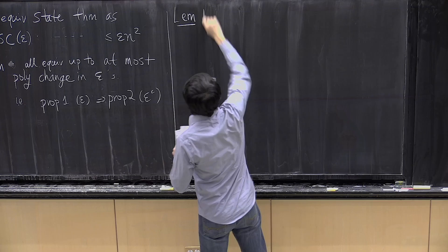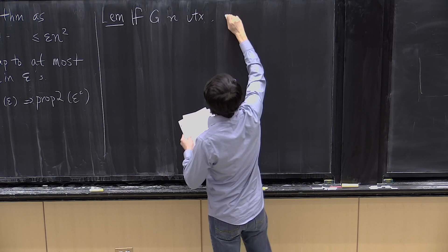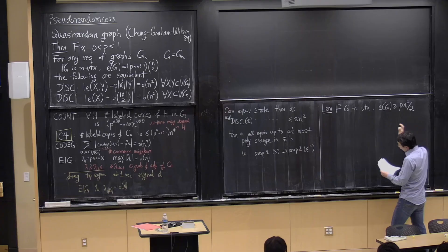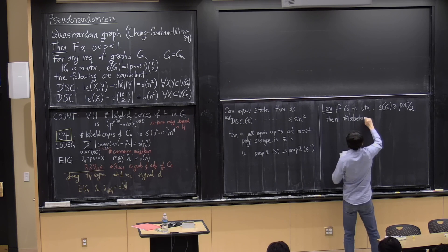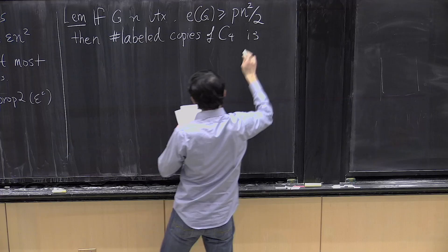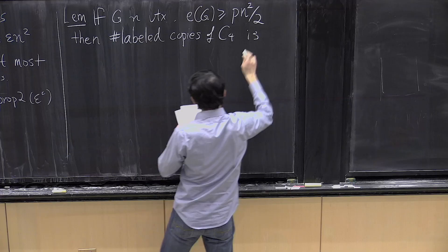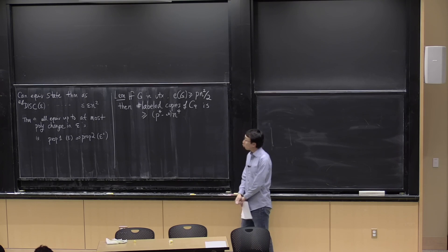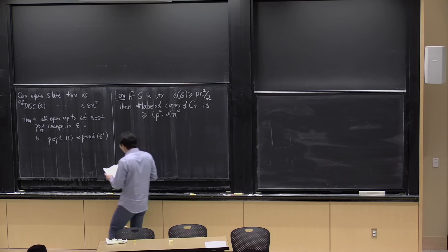The lemma is: if you have a graph on N vertices such that the number of edges is at least P·N²/2 — so edge density basically P — then the number of labeled copies of C4 is at least P⁴ - o(1) times N⁴. So if you have a graph with constant edge density P, then the number of C4s is at least roughly what you would expect in a random graph.